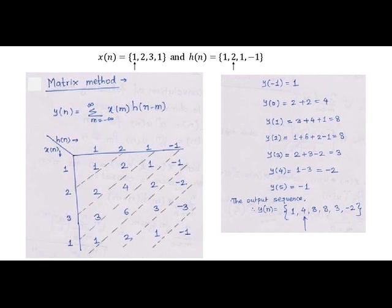So y(-1) hence will be equal to 1. y(0) is the addition of these two diagonal elements 2 plus 2. y(1) is an addition of 3 plus 4 plus 1. y(2) is an addition of 1 plus 6 plus 2 plus minus 1. y(3) is 2 plus 3 minus 2. y(4) is 1 minus 3, and y(5) is minus 1. So when we arrange the output sequence we will put an arrow for the amplitude value of output sequence which lies at origin whose value is 4.